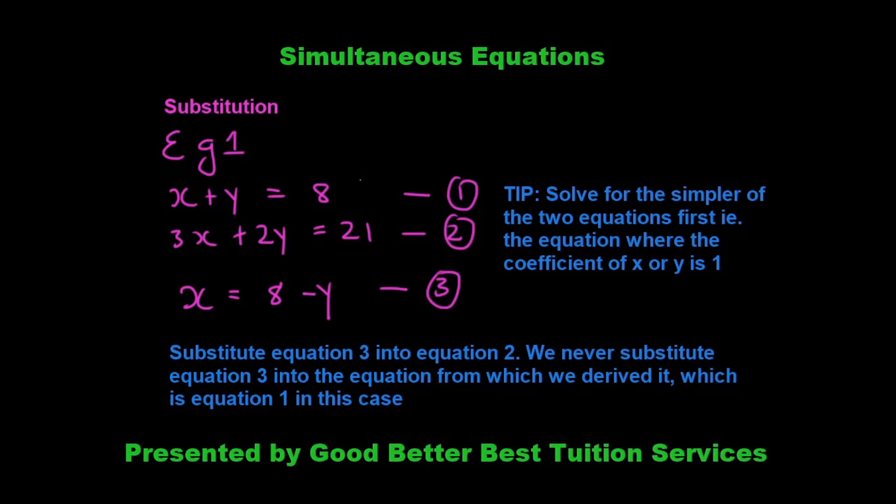Now with simultaneous equations, we need to solve for whatever variables they give us. They give us two variables and we need to solve for both. I always say to my students: solve for the simpler of the two equations first — in other words, the equation where the coefficient of x or y is 1.